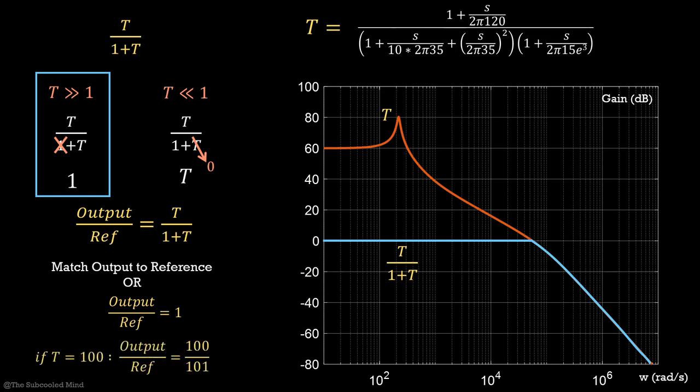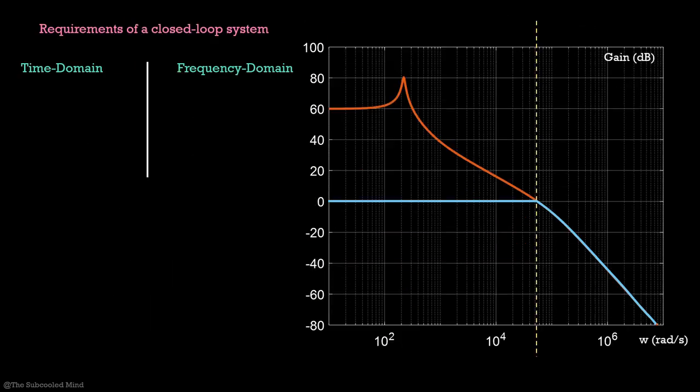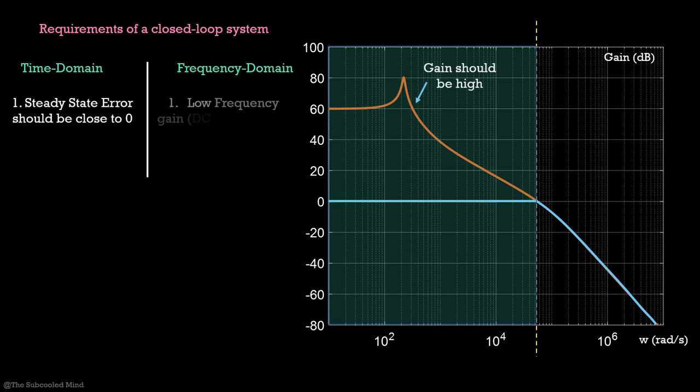For example, if T is 100 in the low frequency region, then output to reference will become 100 upon 101 or there is an error of 1%. If we increase T further, error will be even less. To take this discussion further, we will list down requirements of what makes a good control system good. We have already seen the first requirement. The steady state error should be as close to zero as possible. In terms of frequency domain, what it means is the low frequency gain should be high.